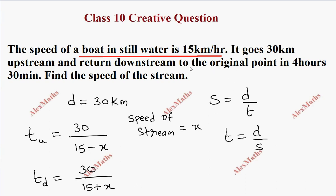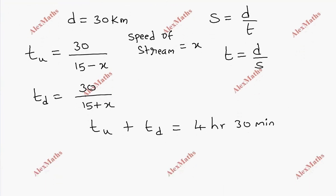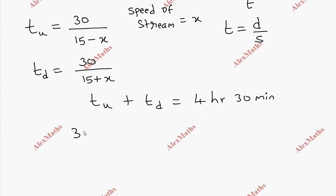Total time is 4 hours and 30 minutes. So time for upstream plus time for downstream is 4 hours 30 minutes. So the expression form is 30 by 15 minus x plus 30 by 15 plus x is equal to 4 hours 30 minutes.